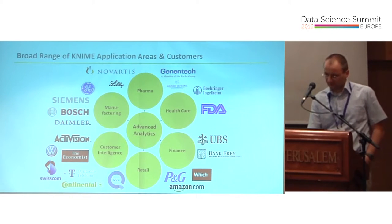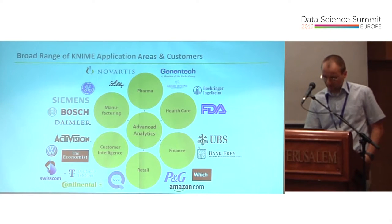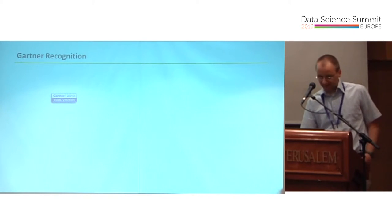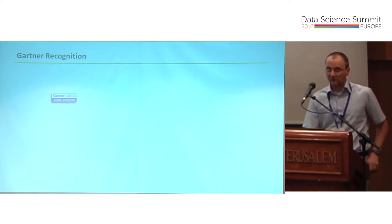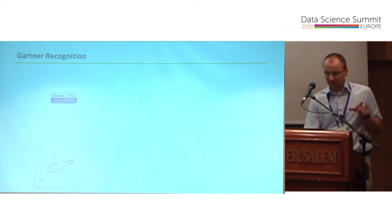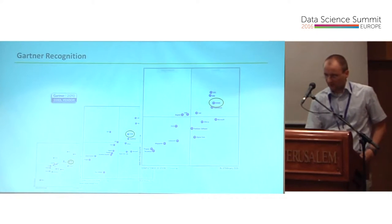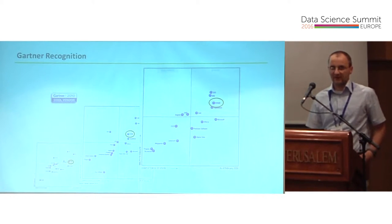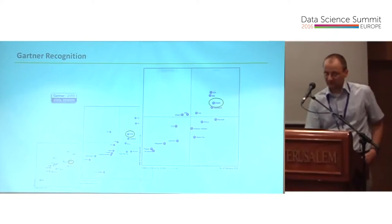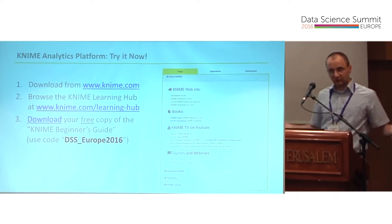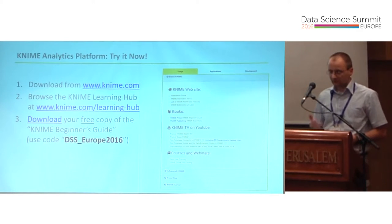We're based in Switzerland, so we also have banks as customers. Beyond our own claims, we are recognized externally. Gartner named us a cool vendor in business intelligence and analytics, and then for the last three years we were named a leader in the advanced analytics quadrant — alongside typical competition like SAS and IBM's SPSS Modeler. You can find more information and download the open source product for free at knime.org.